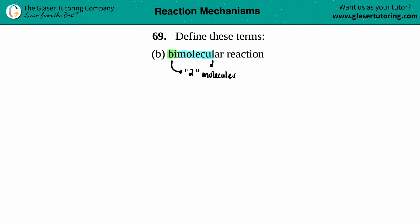A bimolecular reaction is a reaction in which two molecules are your starting reactants. So whenever you have two reactants that make products, that's a bimolecular reaction.